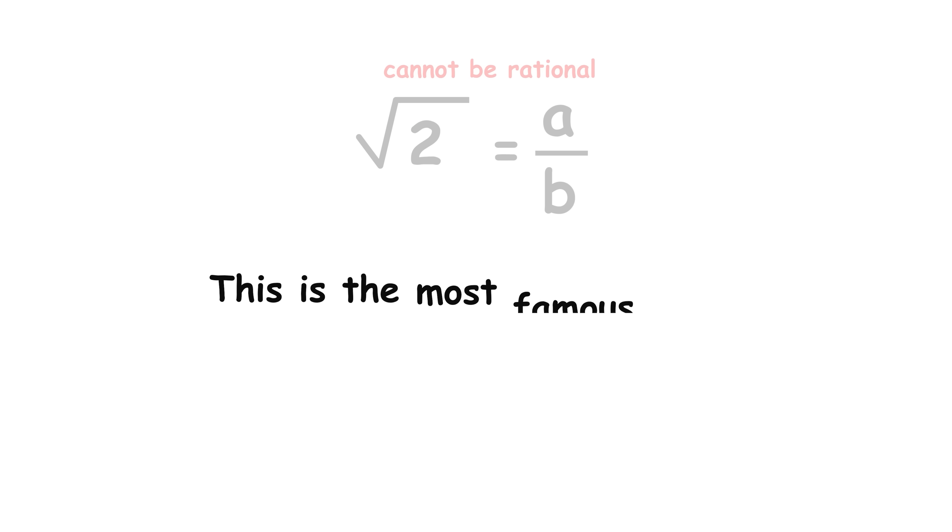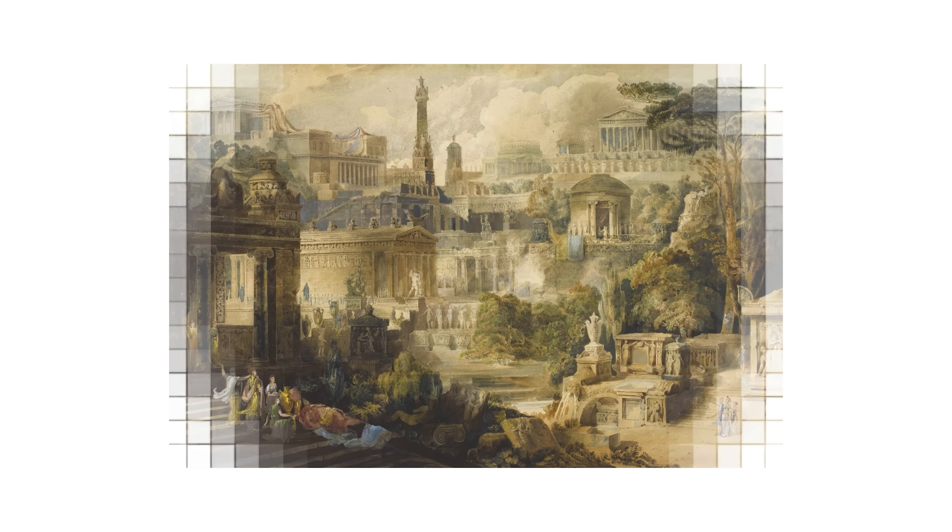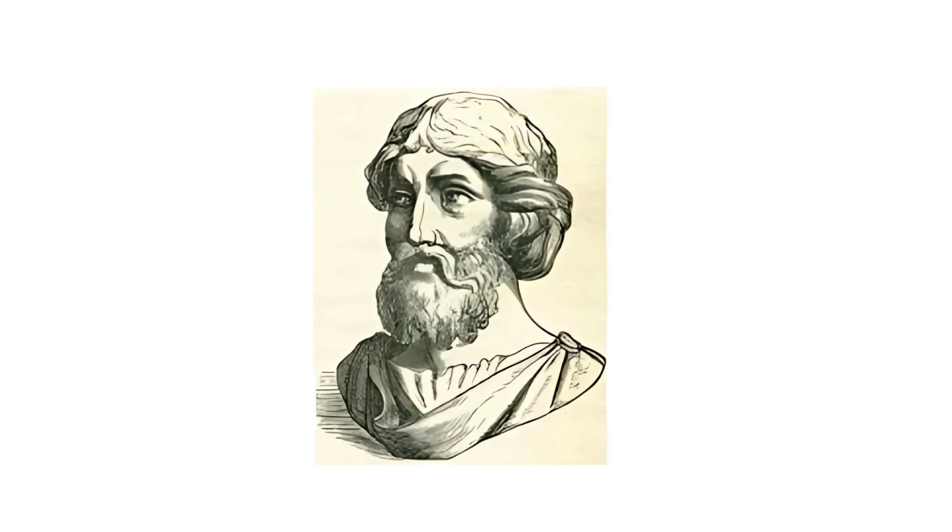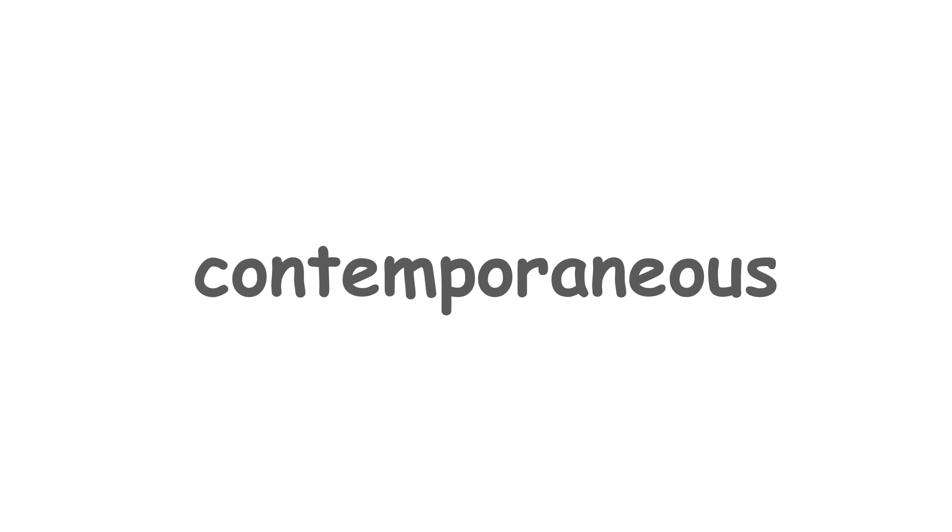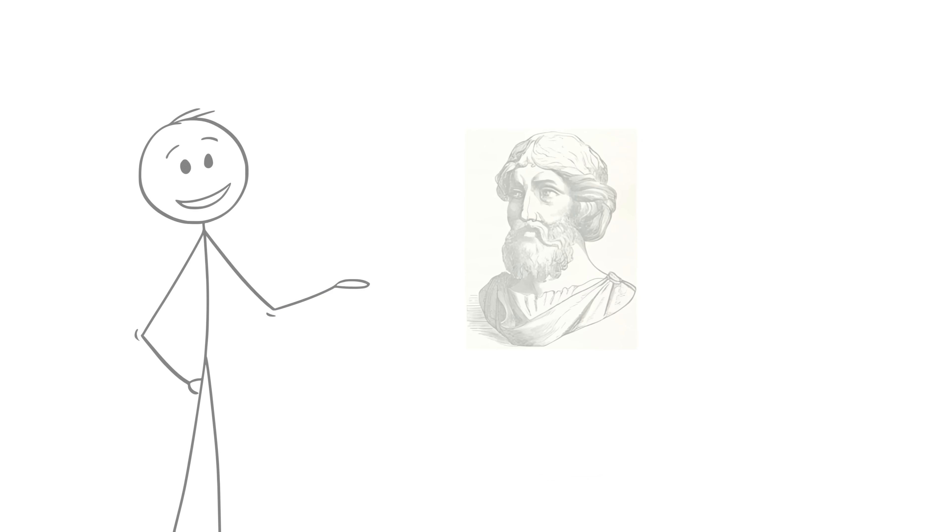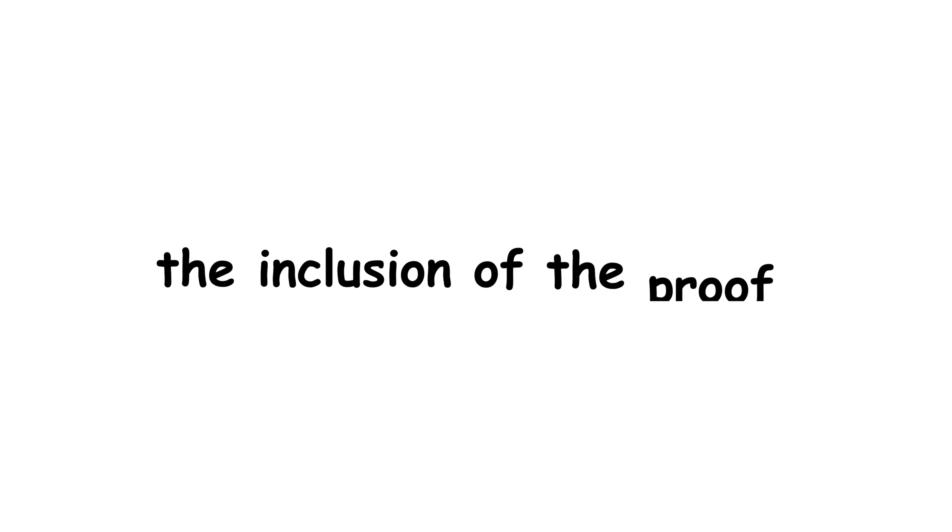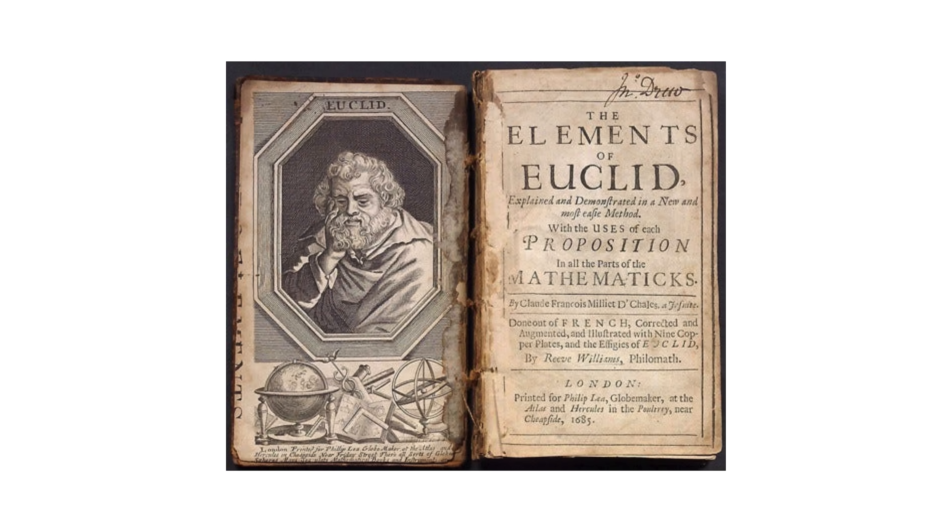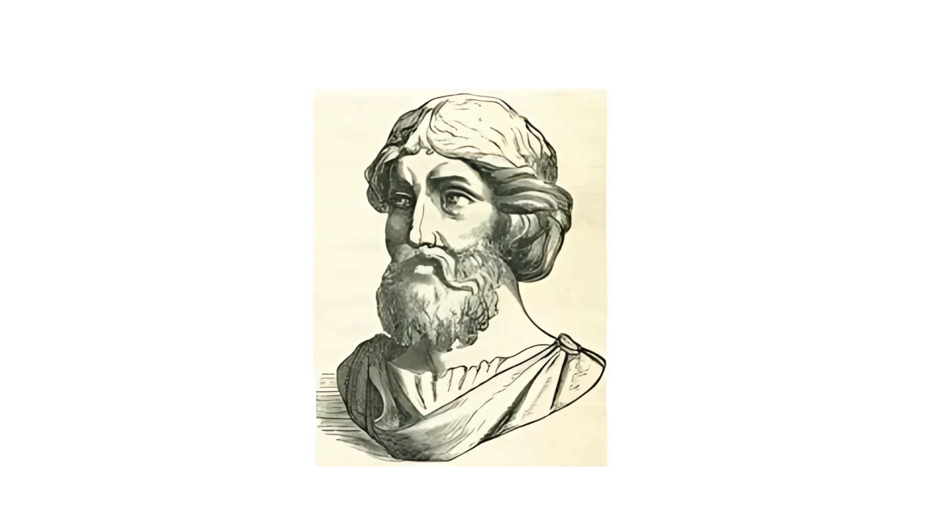This is the most famous proof, often attributed to ancient Greek mathematicians like Hipposus or Euclid. However, sources contemporaneous to Hipposus do not describe him as having derived the proof, and the inclusion of the proof in Euclid's elements was an interpolation. That is, an inclusion not discovered by Euclid himself. The true origin is unknown.